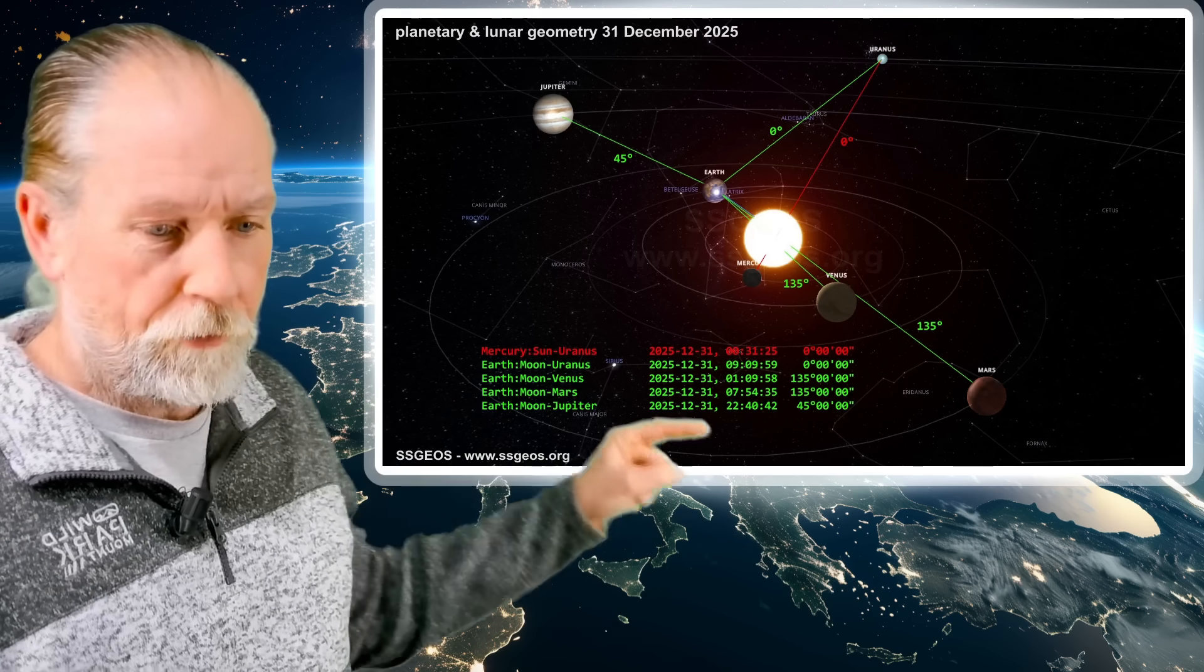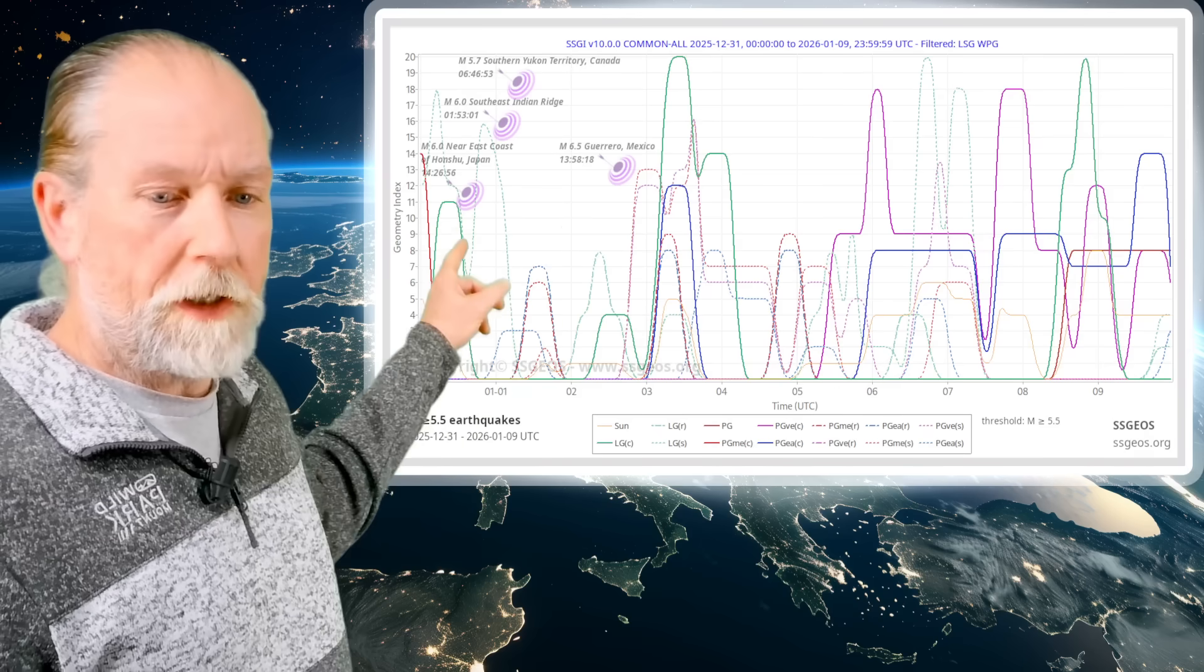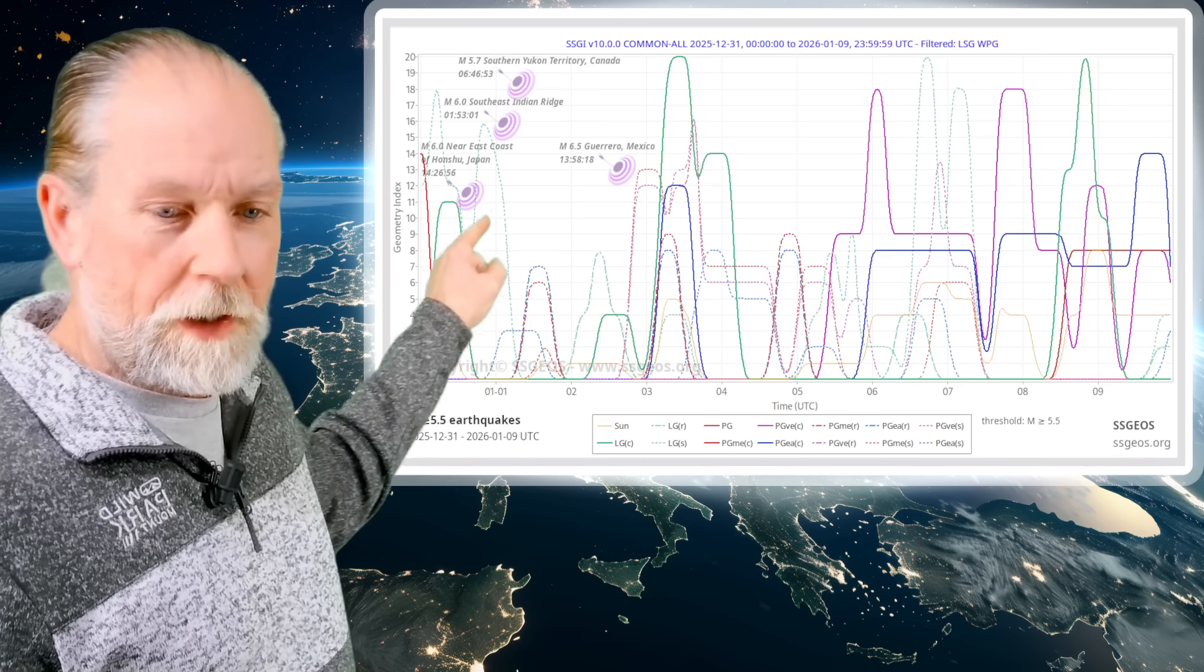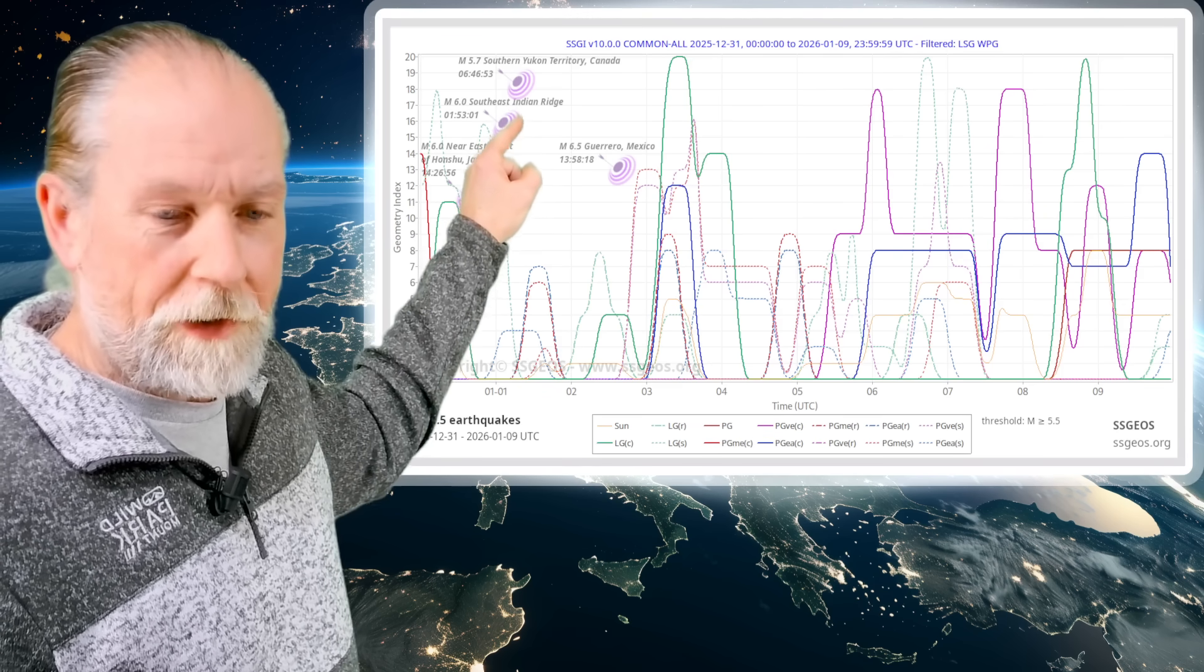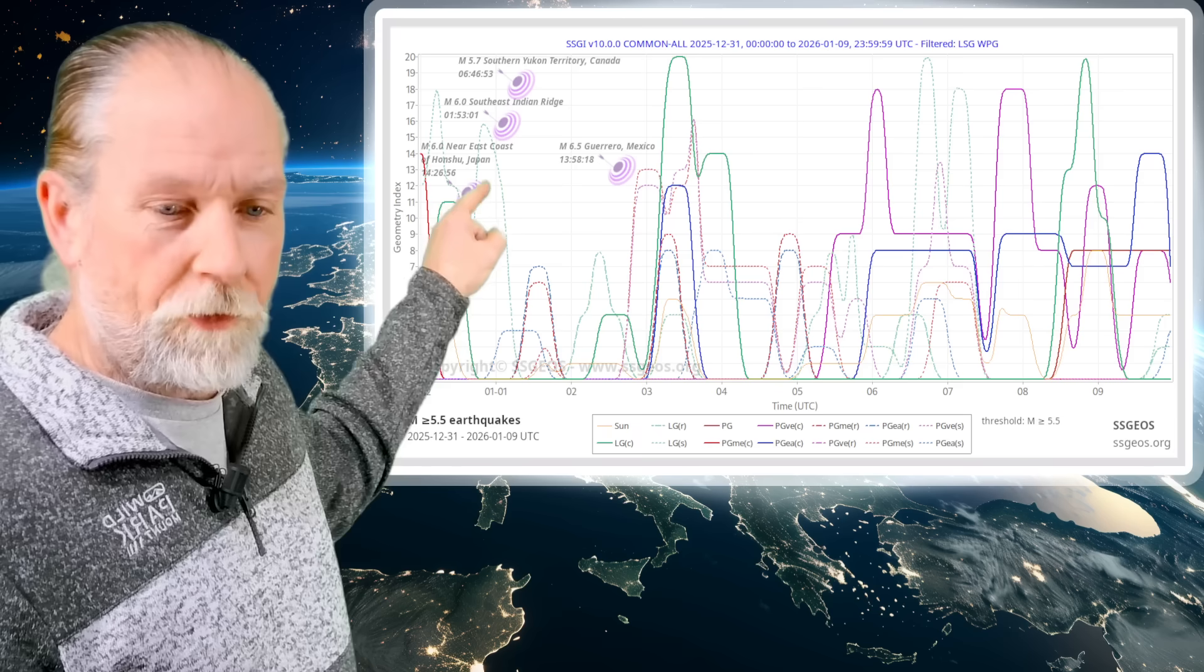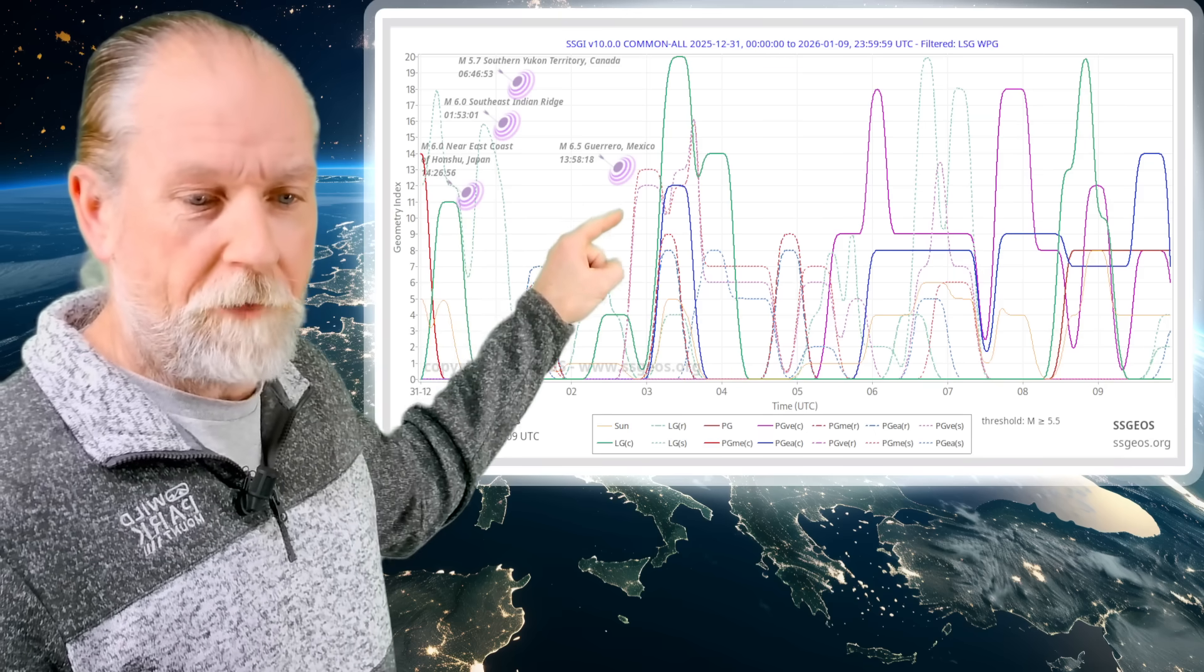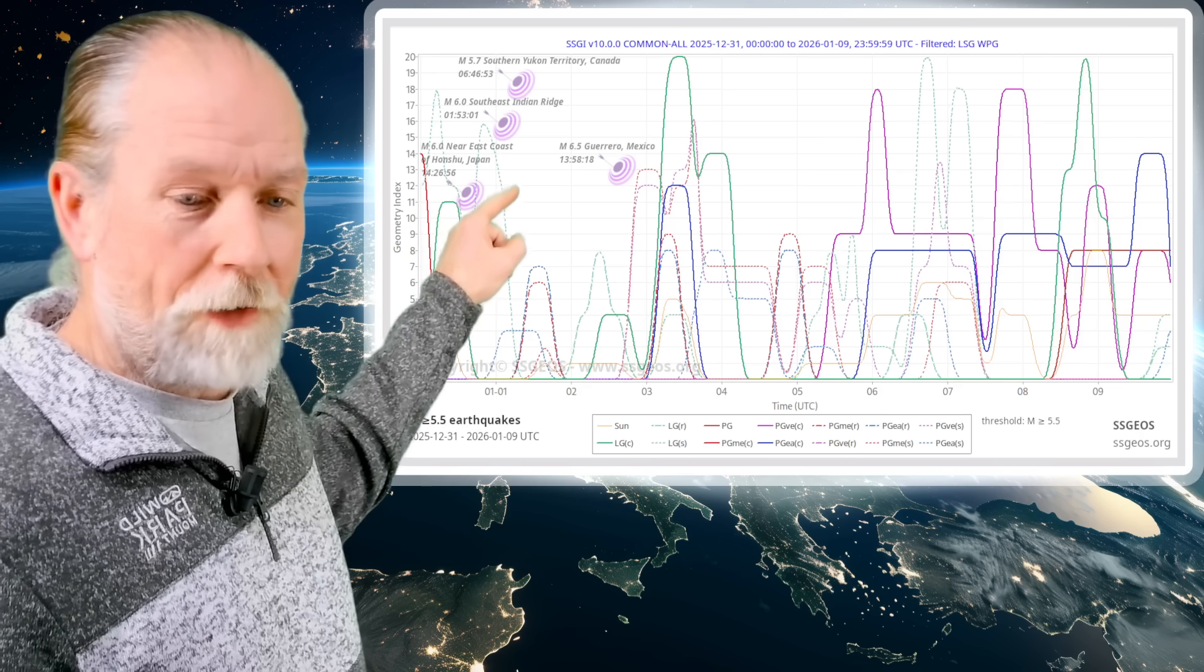As you can see here, a very tight convergence on the 31st. We should see that on the SGI graph as well. This is the lunar peak I explained earlier. You see this red peak here - that's the Mercury-Sun-Uranus alignment. We see increased seismic activity, also a 5.7 in southern Yukon territory, Canada. These are three strong earthquakes on the 31st and 1st of January, following the lunar geometry. This is typical temporal clustering of stronger earthquakes.